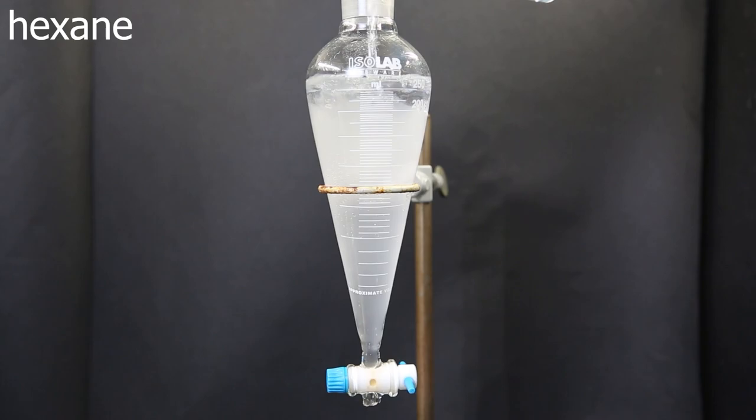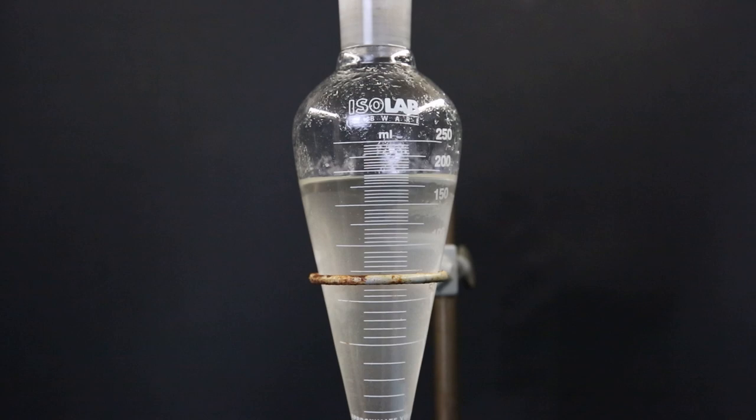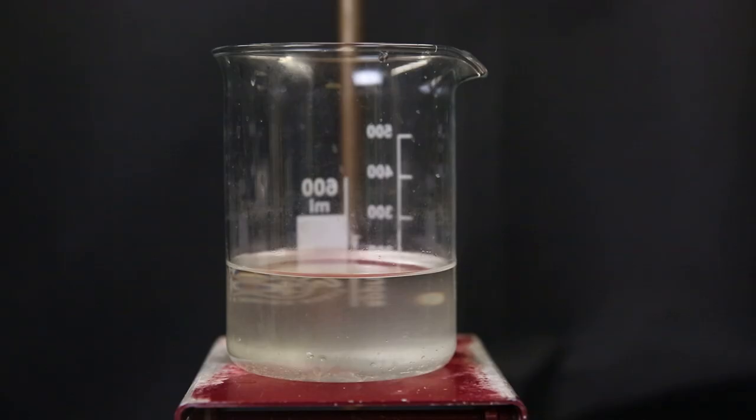I add the hexane to the distillate and shake it around. And we can see some of the cloudiness has moved into the hexane. Now I do the same to the whole distillate. And in the end, I am left with a bunch of hexane that should contain the lemongrass oil.